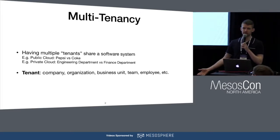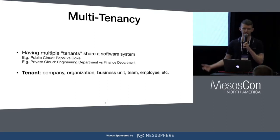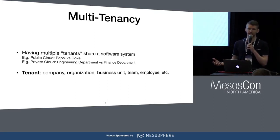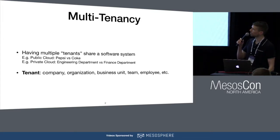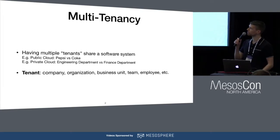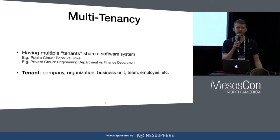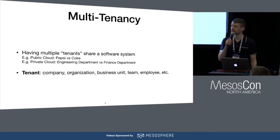An example of this is something like AWS or Google Cloud where you have two different companies — Coke and Pepsi — sharing that same system, that same platform. If you're a single company, you might have a private cloud where you have the engineering department and the finance department sharing the same platform, and maybe they don't want to see each other.